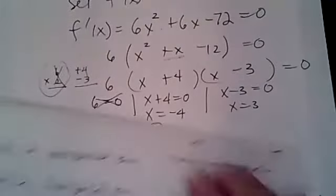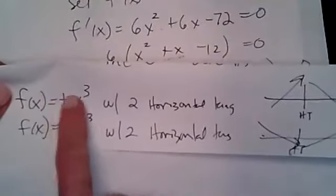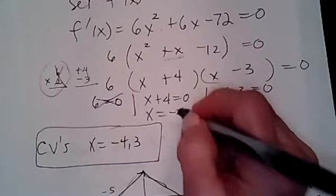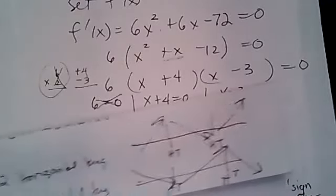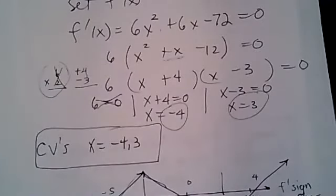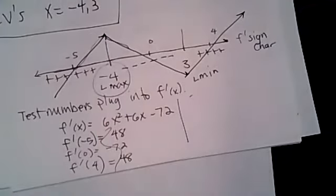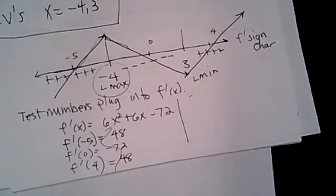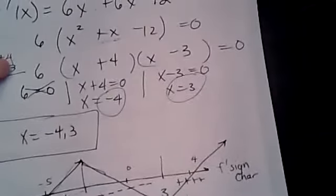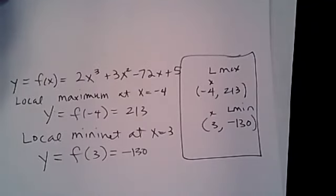Here's the shortcut: since I have a positive x³ with two horizontal tangents, I could have just put -4 and 3 on my sign chart and immediately written up, down, up — because a positive x³ always does that. I would have saved all the work of testing values. A positive x³ will always have a local max first and then a local min.